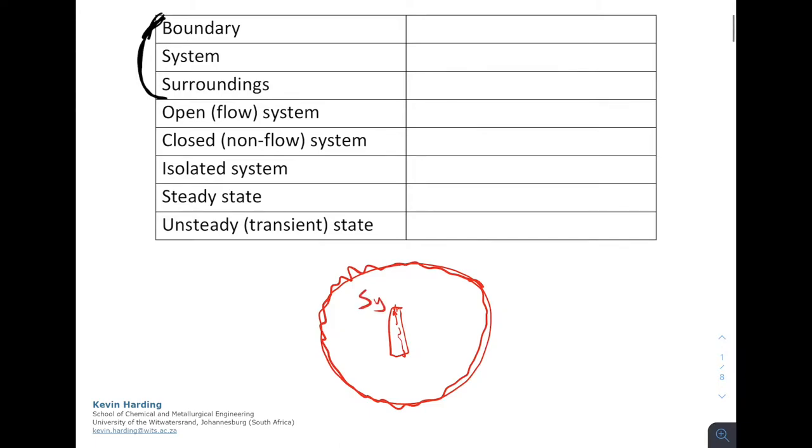Everything inside it is going to be the system, and everything outside it is going to be the surroundings. So simply the boundary divides the system, which is going to be inside, and this divides the system and the surroundings. The surroundings is everything that is outside our area of interest.